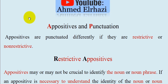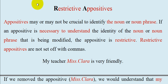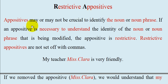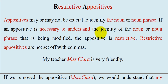Appositives and punctuation. Appositives are punctuated differently depending on whether they are restrictive or non-restrictive. Restrictive appositives are those that are necessary — crucial — to understand the identity of the noun or noun phrase being modified in the sentence. We call these restrictive appositives.